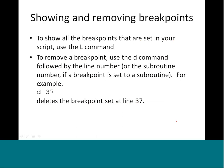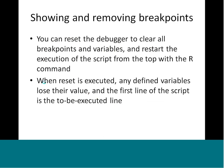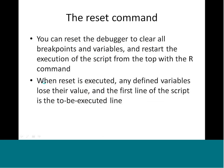To show all breakpoints set in the script, use the uppercase L command. To remove a breakpoint, use the d command followed by the line number - for example, d 37 deletes the breakpoint at line 37. The reset command, or r, clears all breakpoints and variables and restarts execution from the top of the script. When reset is executed, any defined variables lose their values and the first line of the script is set to be executed.